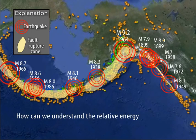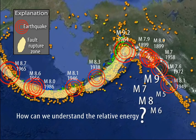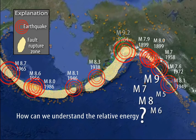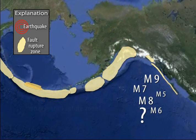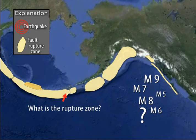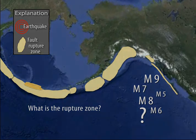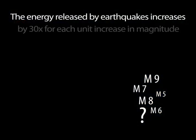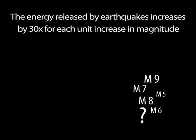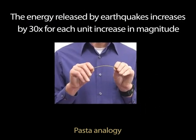How can we understand the relative energy released by a great earthquake of magnitude 9 compared to smaller yet still damaging earthquakes? The energy released by earthquakes increases by a factor of 30 for each unit increase in magnitude.